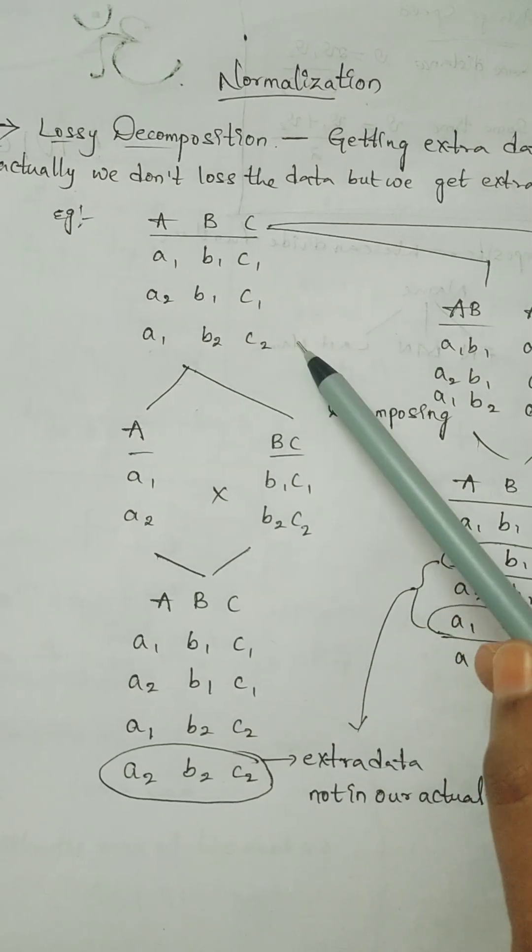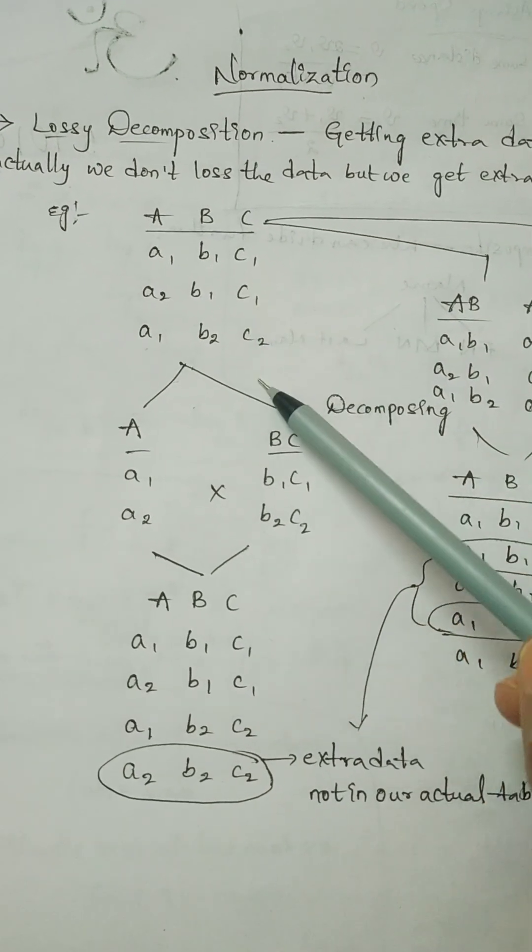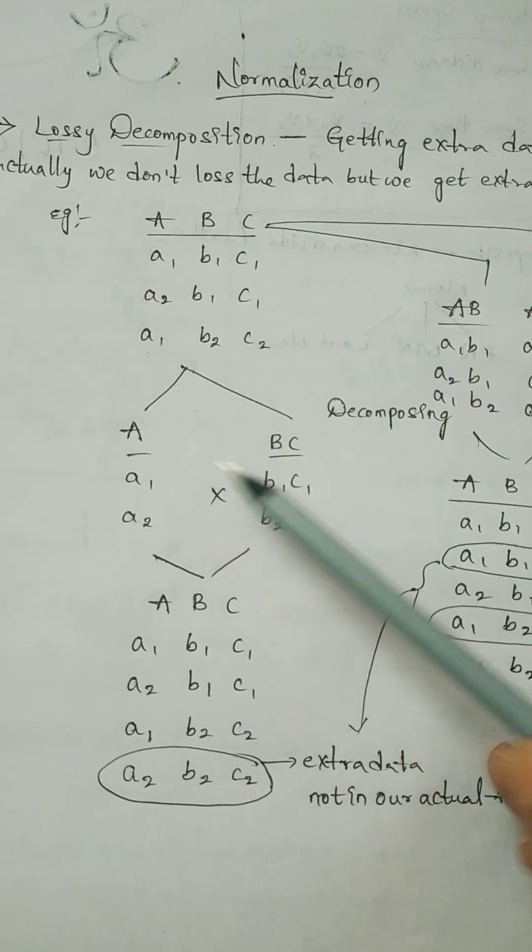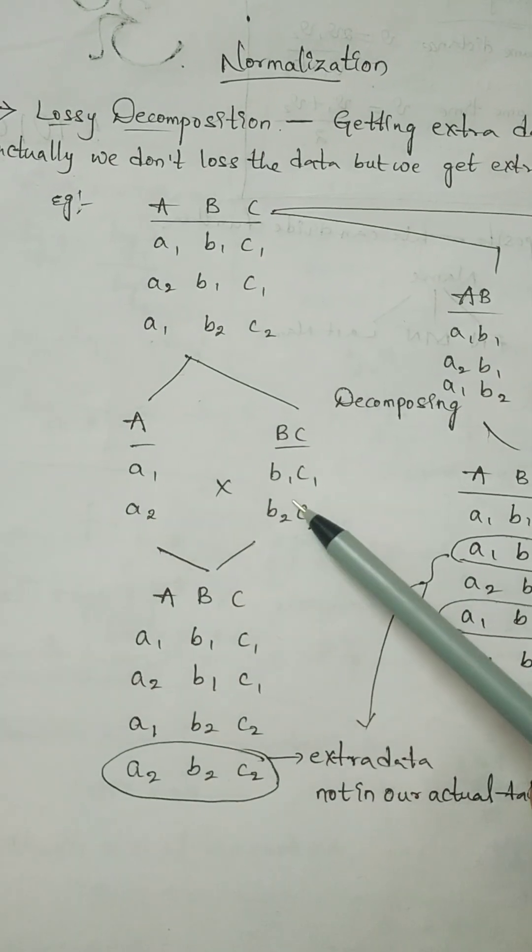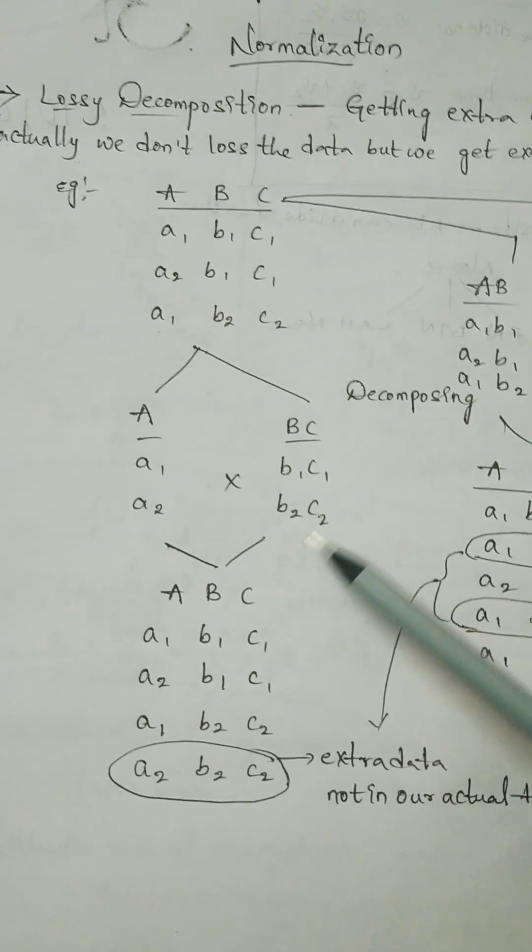I take the example like ABC as a data set here. Here we have three tuples. We divided into two decompositions like A and BC. Here you can see A1 and A2 as attributes. Here B1, C1, B2, C2.